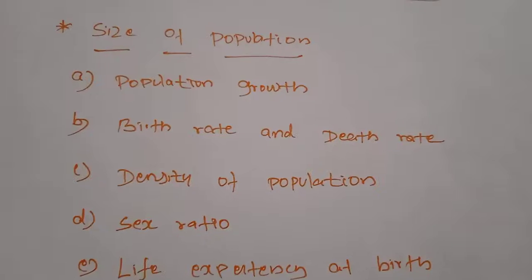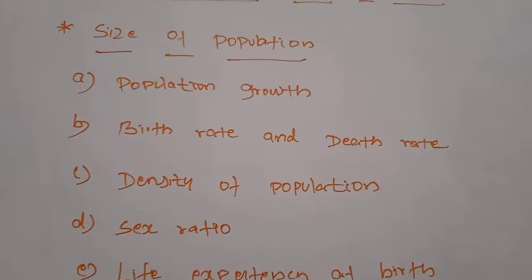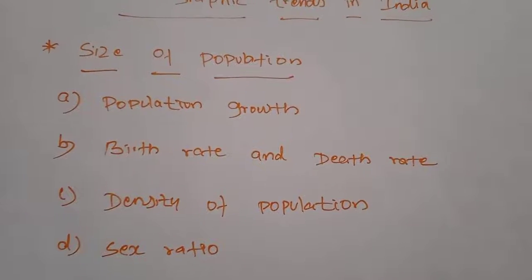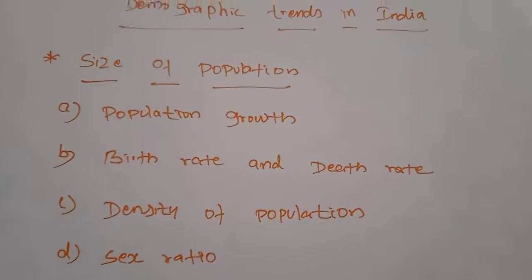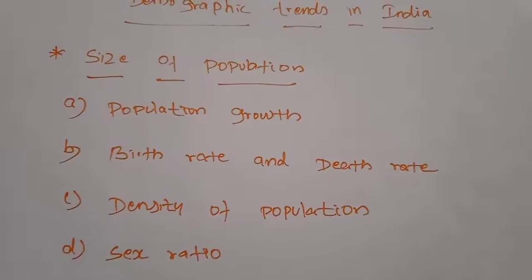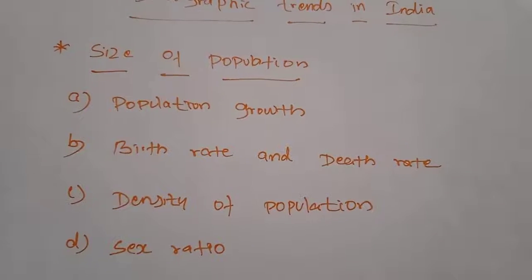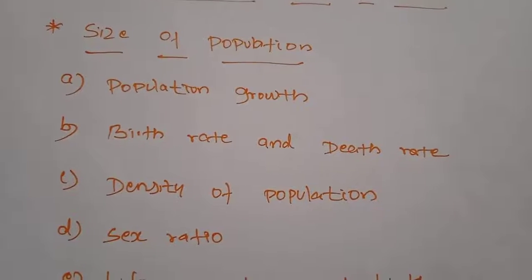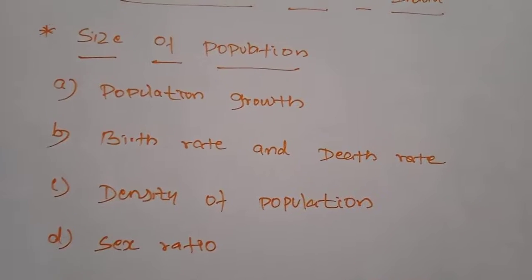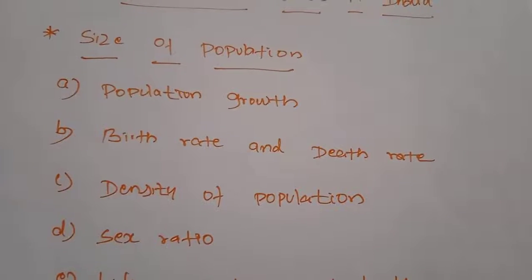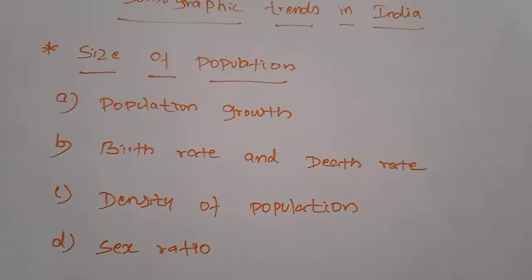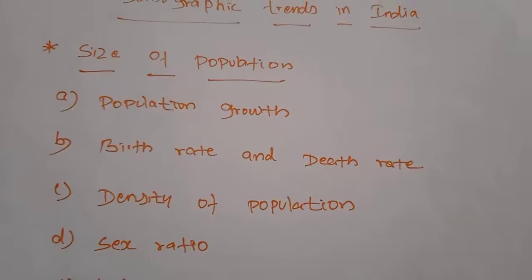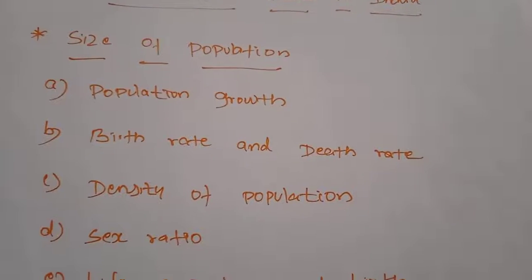During 1961, the population of India started increasing at the rate of 1.96% to 2%, hence 1961 is known as the year of population explosion. To summarize: 1921 is the year of Great Divide; 1951 is the year of small divide; and 1961 is the year of population explosion.